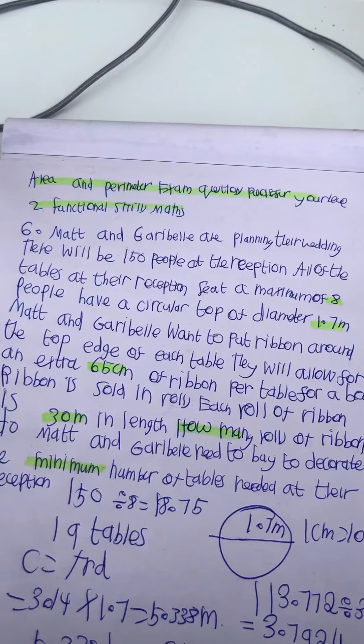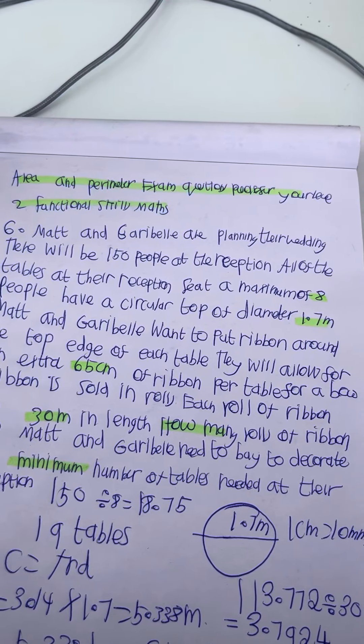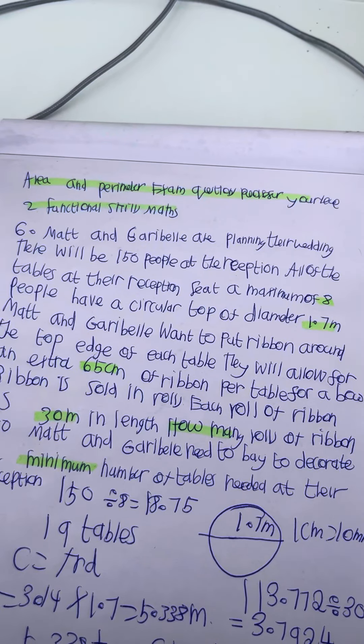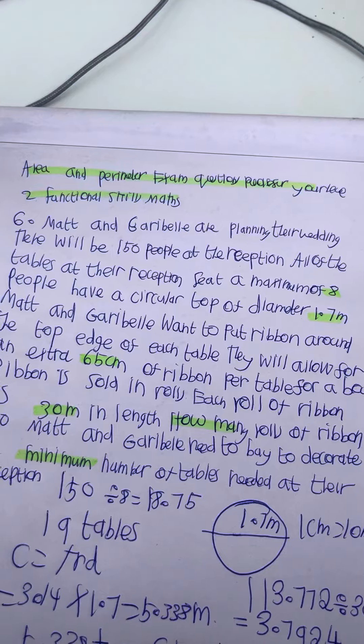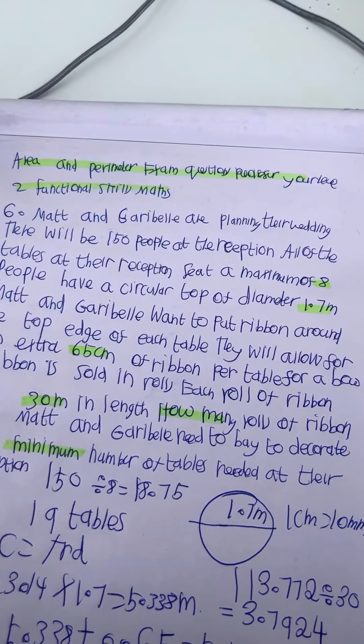Matt and Gabrielle are planning their wedding. There will be 150 people at the reception. All of the tables at the reception seat a maximum of 8 people and have a circular top with a diameter of 1.7 metres.